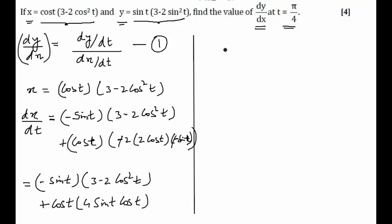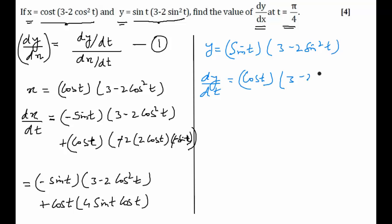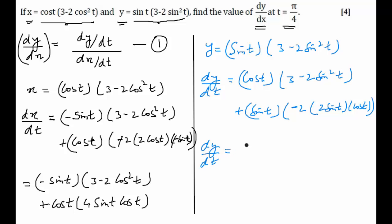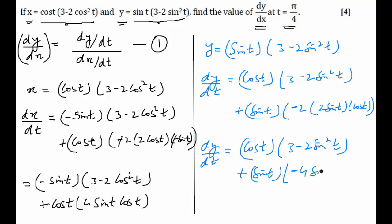Now let us go to the value of y. y is equal to sin(t) into (3 minus 2sin²(t)). dy/dt can be found using the product rule: dy/dt equals cos(t) into (3 minus 2sin²(t)), and when I differentiate the second bracket I get sin(t) into minus 2 into 2sin(t) into cos(t). On further simplification, dy/dt equals cos(t) into (3 minus 2sin²(t)) plus sin(t) into minus 4sin(t)cos(t).